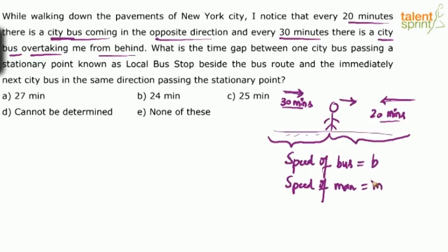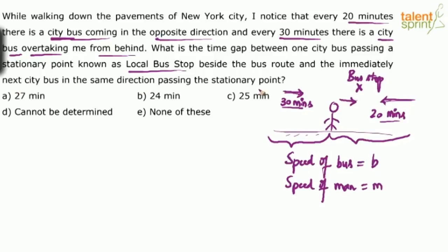B and M are the speeds respectively. Every 20 minutes a bus comes from the forward direction; every 30 minutes a bus comes from behind. Now, there is a bus stop — a stationary point. The question asks: what is the time gap between one city bus passing this bus stop and immediately the next city bus in the same direction passing the same stationary point?